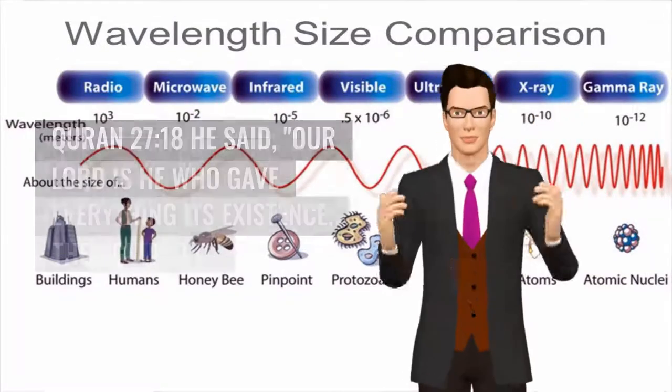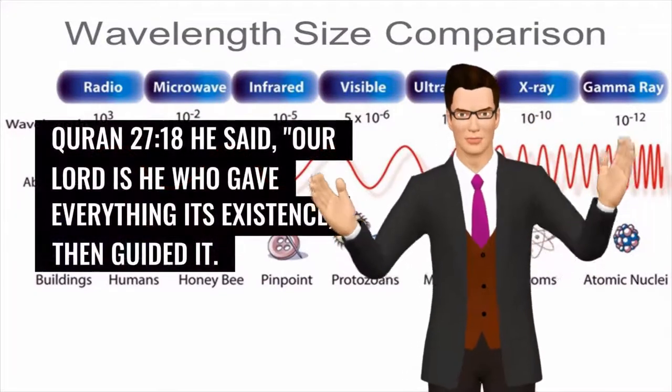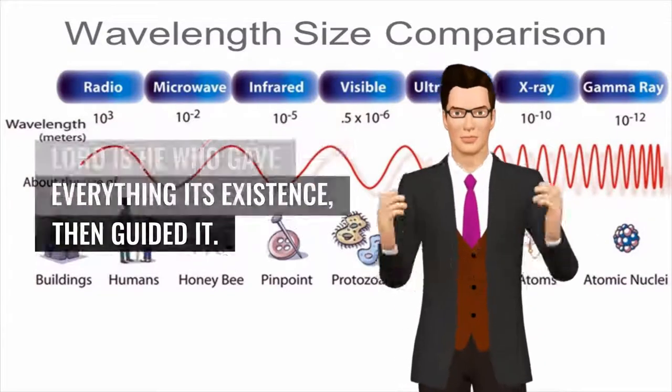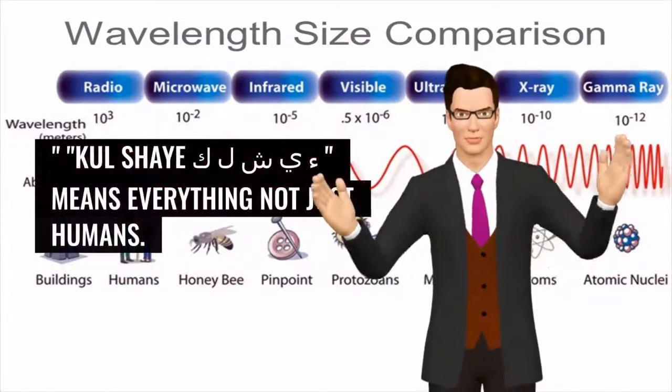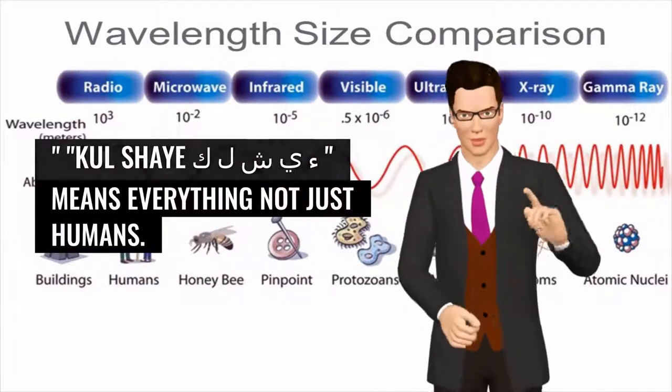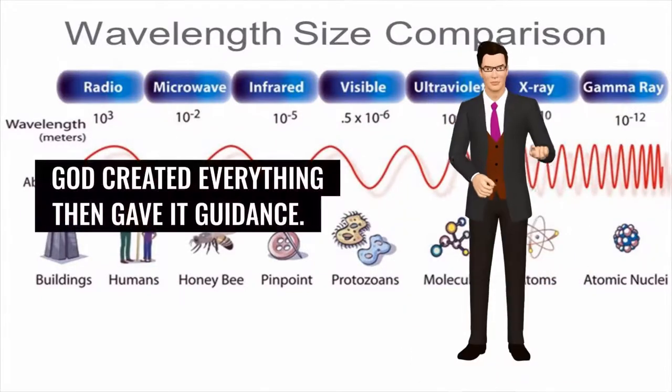Quran 27:18 he said, Our Lord is he who gave everything its existence, then guided it. Kul Sheikov Lam Sheen Ya Hamzat means everything, not just humans. God created everything then gave it guidance.